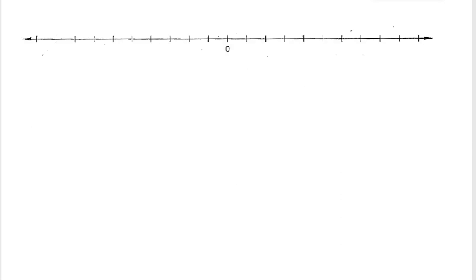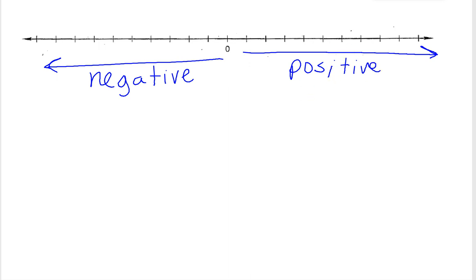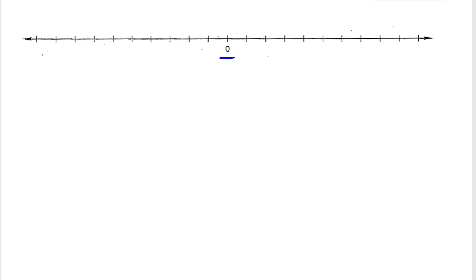So here I have this number line. Remember, the negative numbers are always to the left of 0 and our positive numbers are to the right of 0. When we read positive numbers, we usually do not say the word positive — I don't say positive 3, I just say 3. When we have negative numbers, we would say negative 3. Now 0 is neither positive nor negative.